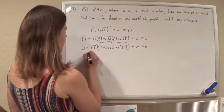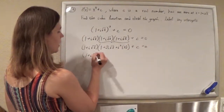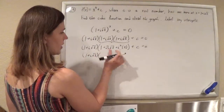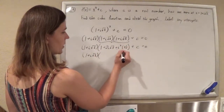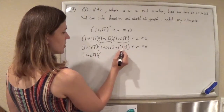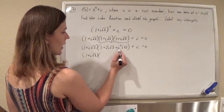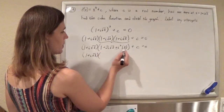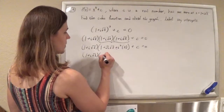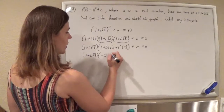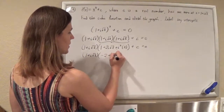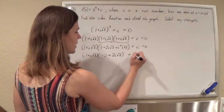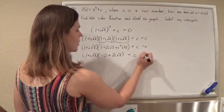And then plus i² times √3 times √3, which is just 3. I'll leave this intermediate result for now. Since i² is negative 1, i² times 3 is negative 3. So 1 minus 3 is minus 2, and then plus 2i√3, plus c equals 0.